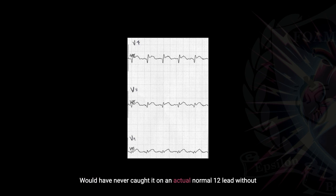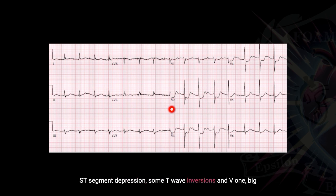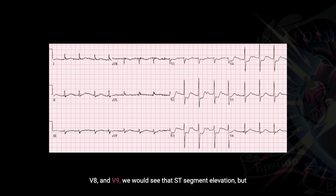We would have never caught it on a normal 12-lead without moving those leads back. What can clue you in is that massive reciprocal change we see in those anterior leads. Here's another great example — ST-segment depressions and T-wave inversions in V1, big-time ST-segment depressions in V2 as well as V3 out to V4. Again, if we put those leads on the backside of the heart — V7, V8, and V9 — we would see ST-segment elevation, but this will never meet ST-segment elevation criteria by itself.